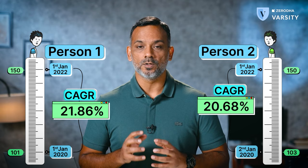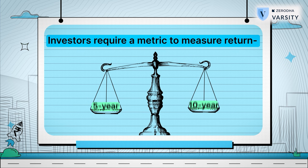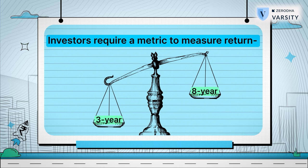This method of calculating return is also called a point-to-point return. The point-to-point return can be misleading at times because of its limitations. What you need instead is a return metric which will give you a sense of how, let's say, a 5-year return has performed over the last 10 years, or how a 3-year return has performed over the last 8 years.